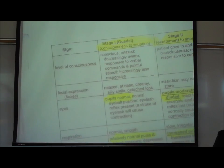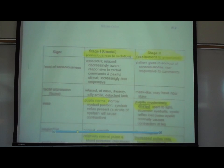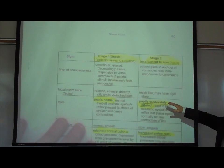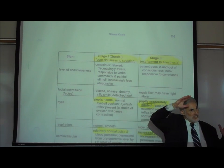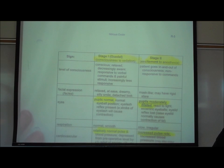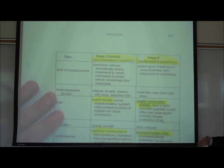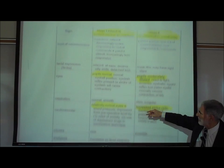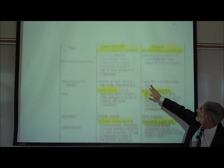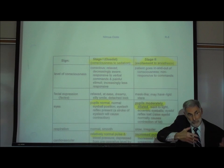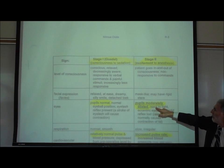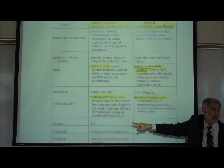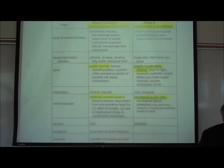On page R3, here's the bottom line on the stages. Stage one is used for nitrous oxide sedation, causing drowsiness and analgesia — pupils are normal and heart rate is relatively normal. If you give too much nitrous oxide, you enter stage two, a period of excitement where the pupils dilate and heart rate goes up. You've actually given too much, not too little — you need to lighten up.